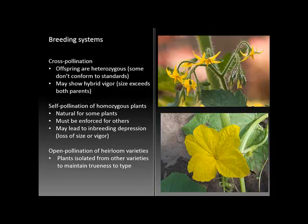There are some situations, especially with heirloom varieties, where the characteristics of a group of parent plants are to be maintained. In those cases, pollination is encouraged between plants of the same variety, but those plants are isolated from each other in order to maintain a characteristic called trueness of type. In cross-pollination cases, the offspring are heterogeneous and heterozygous.